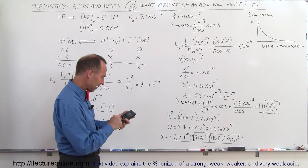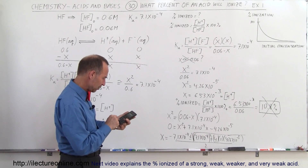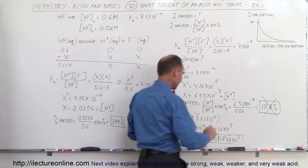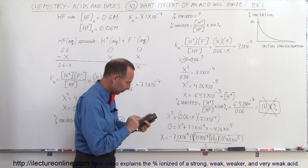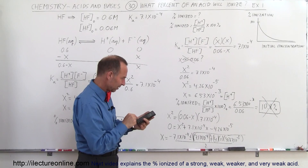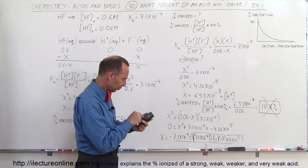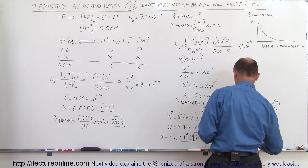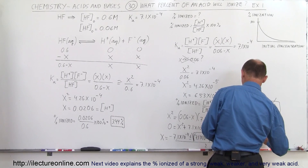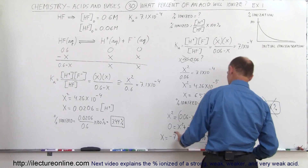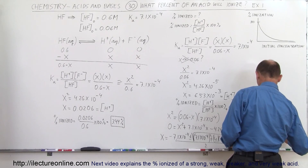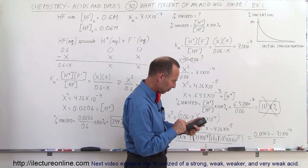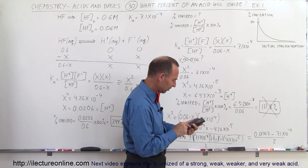Computing the discriminant: 4.26 times 10 to the minus 5 times 4, plus (7.1 times 10 to the minus 4) squared, then taking the square root gives 0.01307. Subtracting 7.1 times 10 to the minus 4 — that's a small number but we go ahead and subtract it — divided by 2.